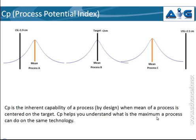Let me explain with an example. I have imagined three different scenarios for the same machine — a machine that produces body caps. The client specification is a diameter of 2 centimeters, with a variation of 1 millimeter acceptable. That means any cap with a diameter between 1.9 cm and 2.1 cm will be accepted by the customer.